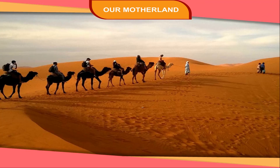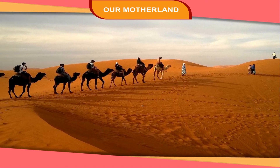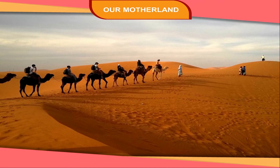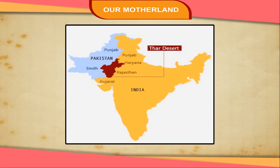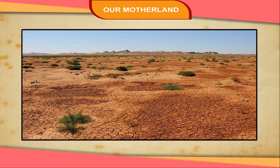Desert. A dry, barren, treeless region, usually sandy and uninhabited, is known as a desert. It supports only sparse vegetation or no vegetation at all. The northwestern part of our country is also dry, barren, and covered with sand. It is called the Great Indian Desert or the Thar Desert. This region is hot and dry. Very few plants or trees grow here. Life is tough in this region.